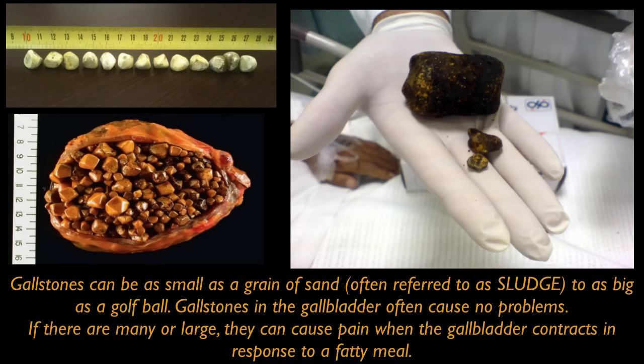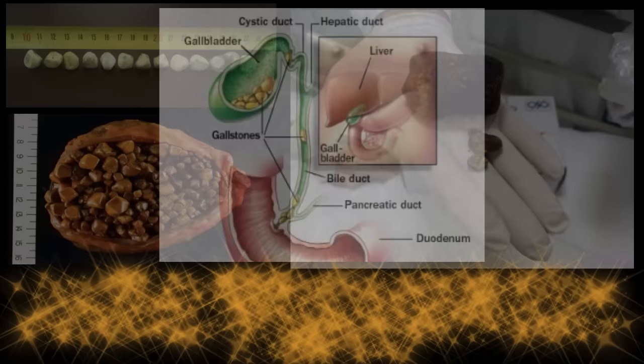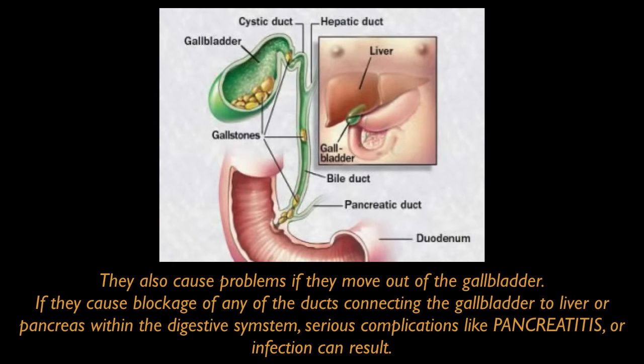Gallstones in the gallbladder often cause no problems. If they are many or large, they can cause pain when the gallbladder contracts in response to a fatty meal. They can also cause trouble if they move out of the gallbladder and cause a blockage of any of the ducts connecting the gallbladder to the liver or to the pancreas. Serious complications like pancreatitis or even infection of the gallbladder can result, something called cholecystitis.